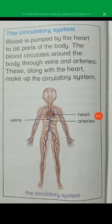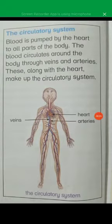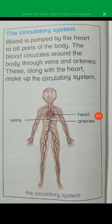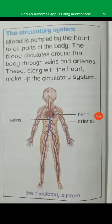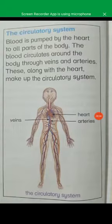Circulatory system में क्या क्या चीज़ें हैं? आपका हार्ट है, veins है और arteries — ये चीज़ें मिलके बनाती हैं हमारा circulatory system. और हार्ट का क्या काम है, वो blood को pump करता है पूरी body में. और circulatory system नाम से ही जाहिर है कि इसका काम क्या है, कि ये circulate करता है blood को पूरी body में. ठीक है?